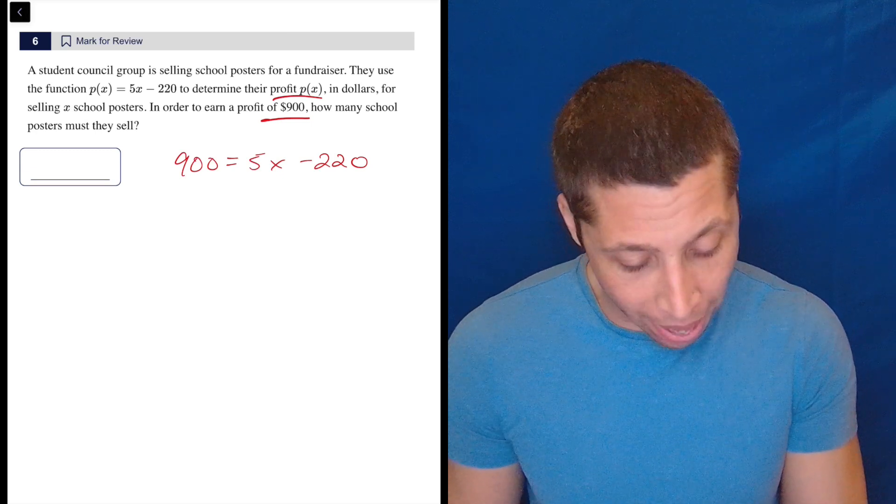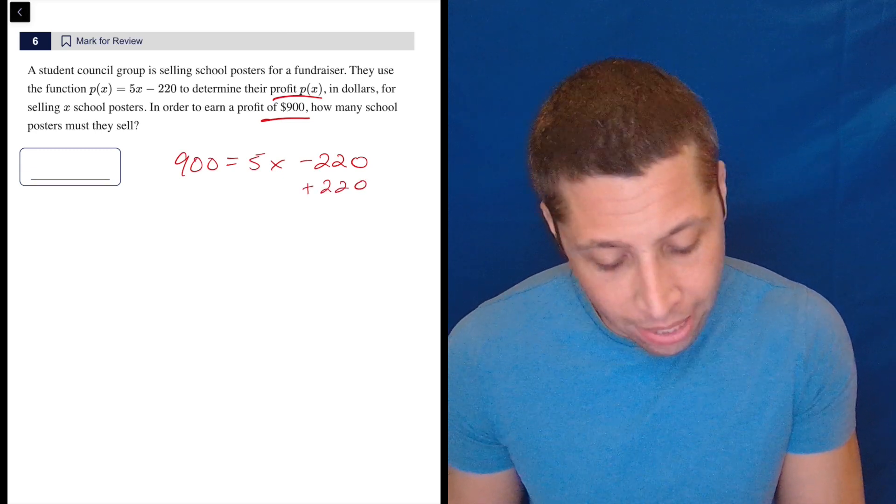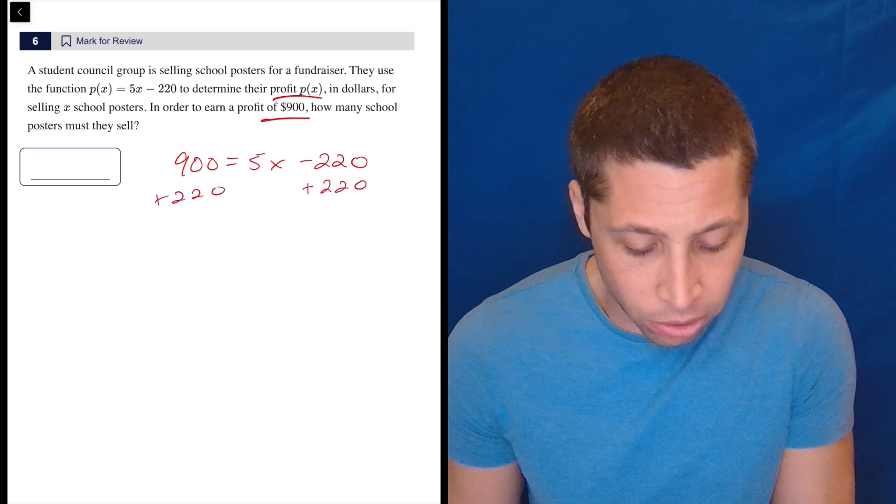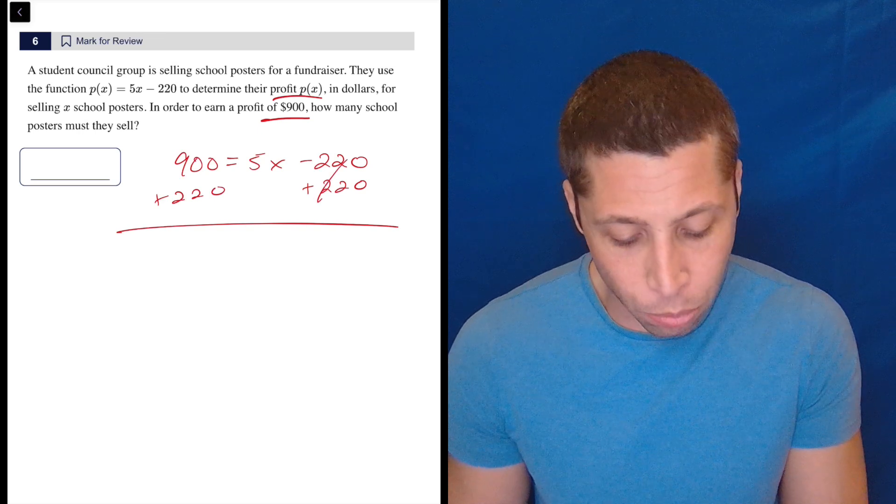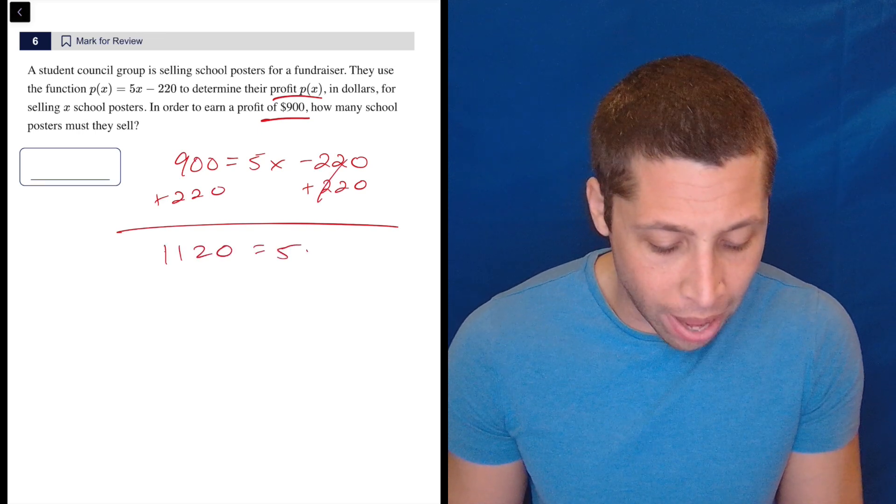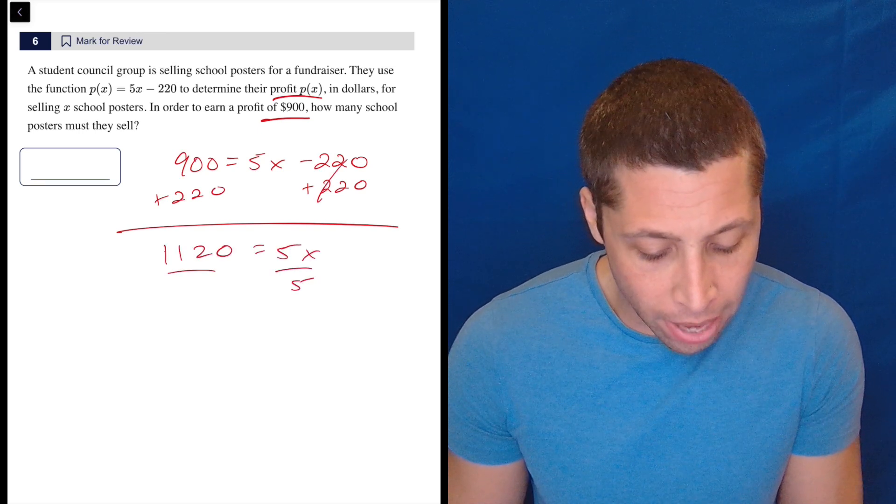But this isn't so bad. We work our way towards the X, so we're going to add the 220 first. That's the furthest away from that X that goes away, and that's going to be 1120 equals 5X.